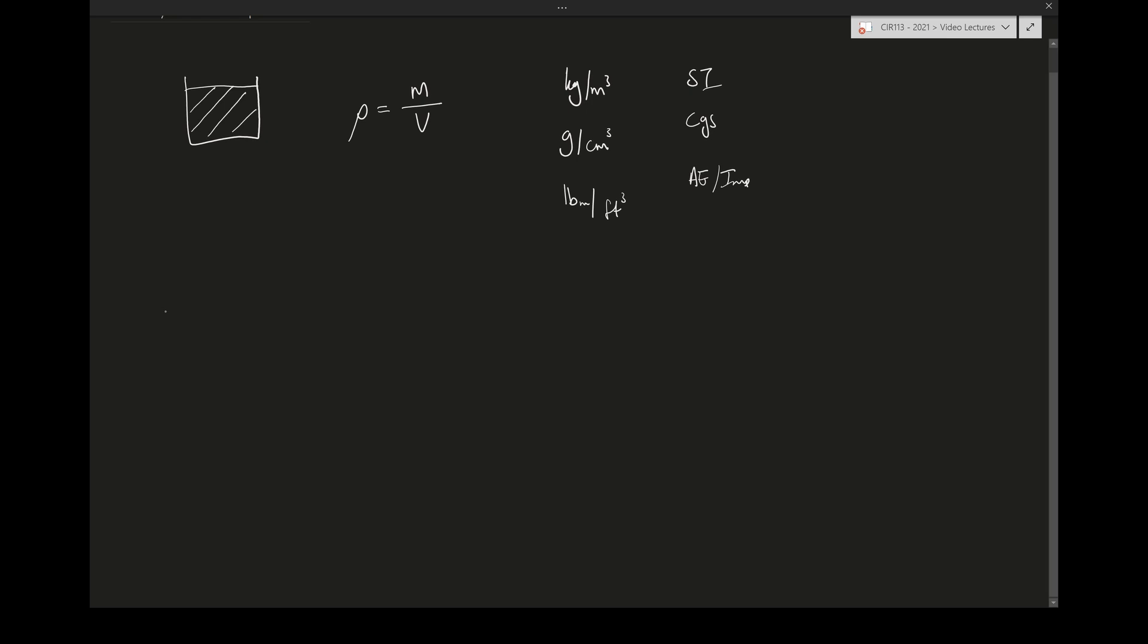Specific volume is written as v caret, and it is one over the density, so it's got units of cubic meters per kilogram. We could also express this as cubic meters per mole, and you know that we can relate the mole to the kilogram with the molecular mass. So these two things are similar, not the same but similar - they're off by the molecular mass of a unit.